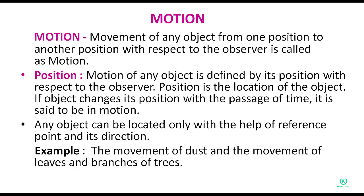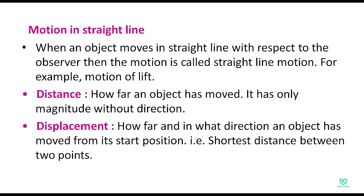Next is motion in a straight line. When an object moves in a straight line with respect to the observer, the motion is called straight line motion. Agar object ek straight line mein move kar raha hai observer ke respect mein, toh us motion ko hum kehenge straight line motion. Example: motion of a lift — lift vertically, ek straight line mein hi chalti hai, y-axis ke along move karti hai.